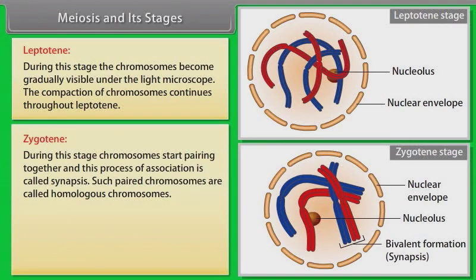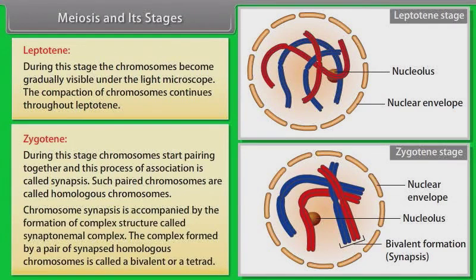This is followed by the second stage of prophase I called zygotene. During this stage, chromosomes start pairing together and this process of association is called synapsis. Such paired chromosomes are called homologous chromosomes. Synapsis is accompanied by the formation of complex structure called synaptonemal complex. The complex formed by a pair of synapsed homologous chromosomes is called a bivalent or a tetrad.